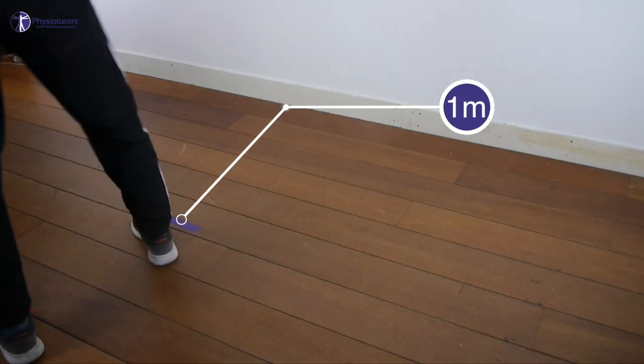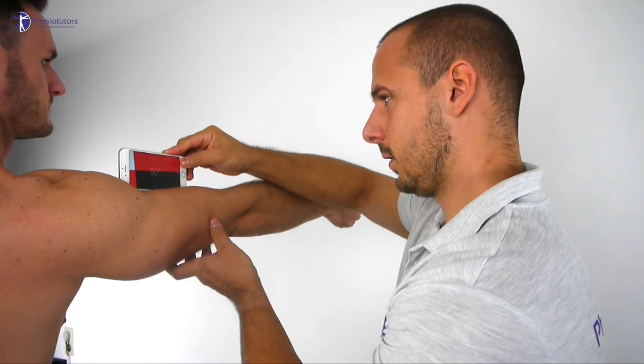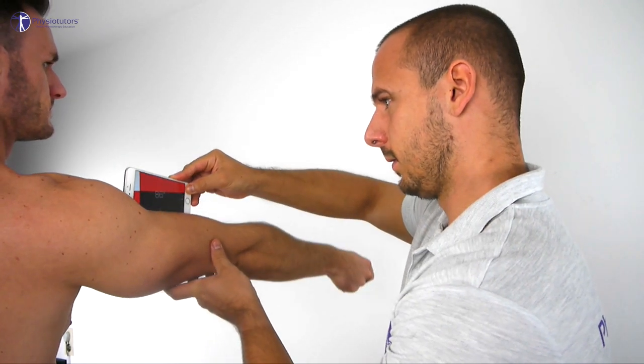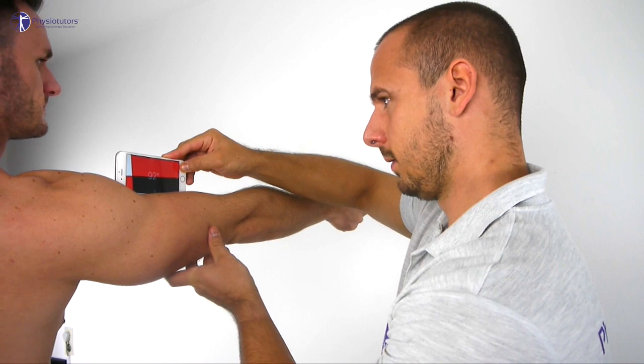For this setup, the patient stands behind a line about a meter away from the wall. With the engaged laser pointer in one hand, they are asked to flex the arm to 90 degrees. You can measure the angle easily and reliably with your smartphone inclinometer.